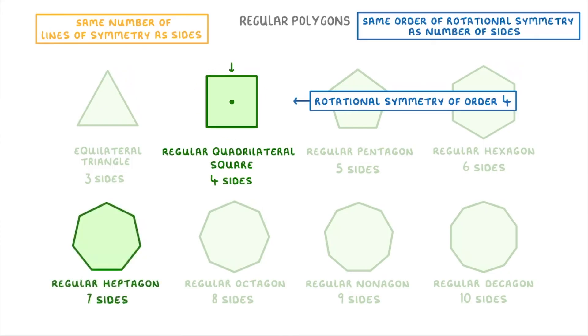And likewise a heptagon with seven sides will have a rotational symmetry of order seven, and the same rule applies to all the others.